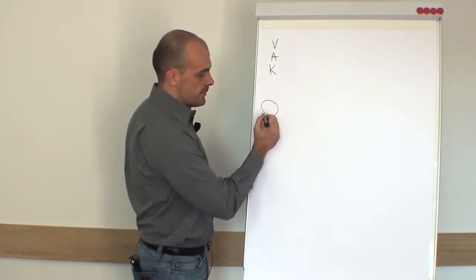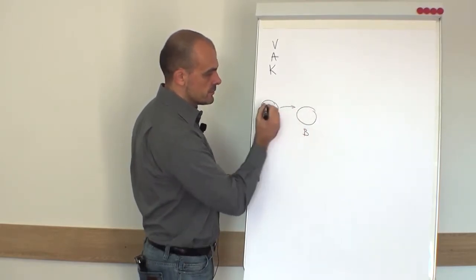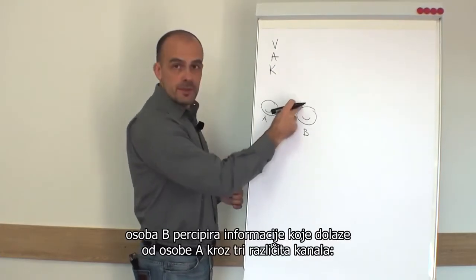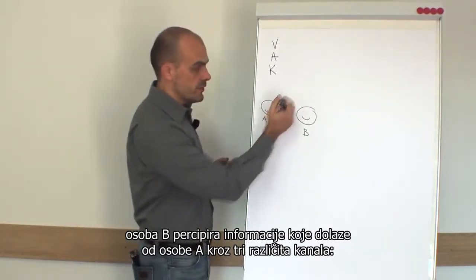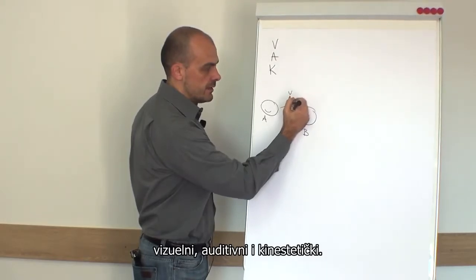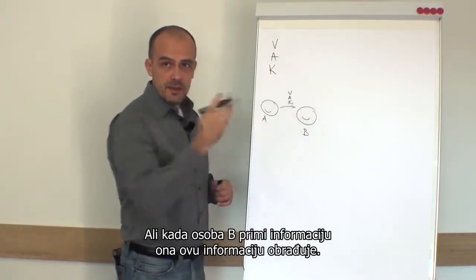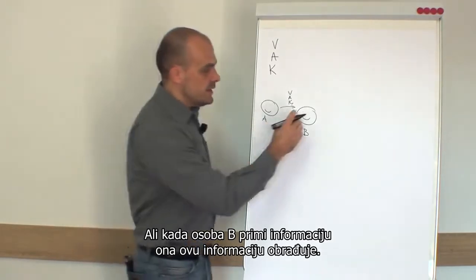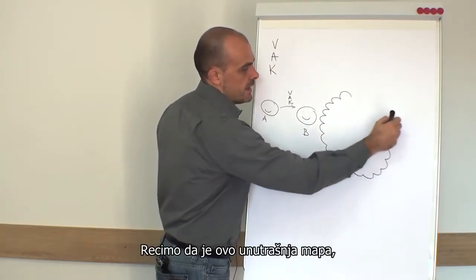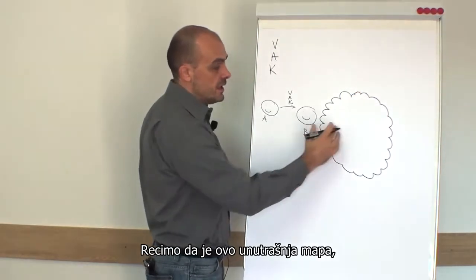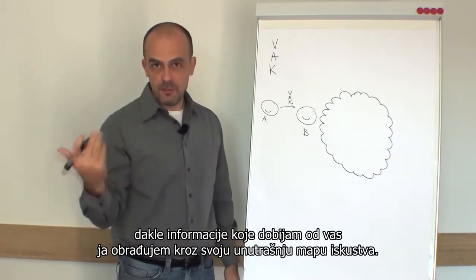If there is a person A communicating with a person B, person B perceives the information coming from person A through three different channels: visual, auditory, and kinesthetic. But when person B receives the information, this information is processed. Let's say that this is the internal map — information that I'm receiving from you, I am processing into my internal map of my experience.